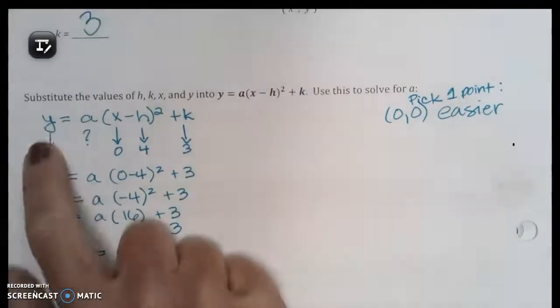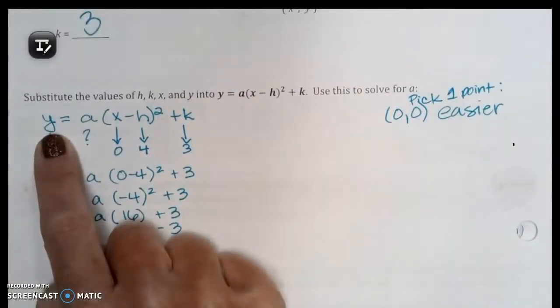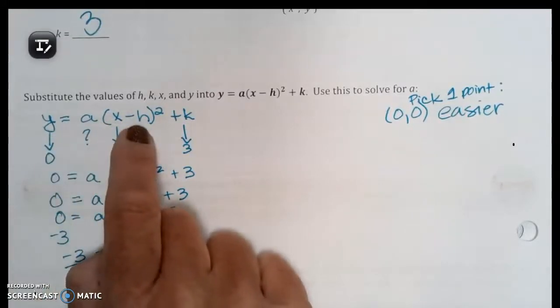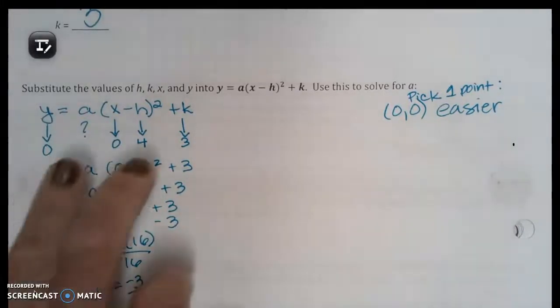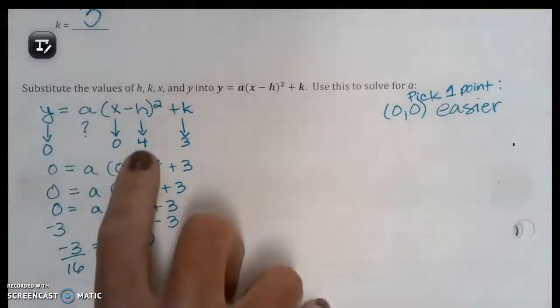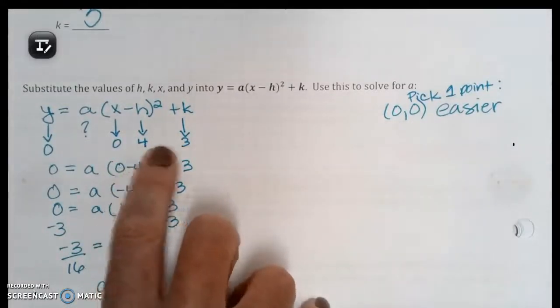So you start with the basic vertex equation which is y equals a times the quantity x minus h squared plus k. And then you're going to substitute in for the h and the k. So here's my h, here's my k.